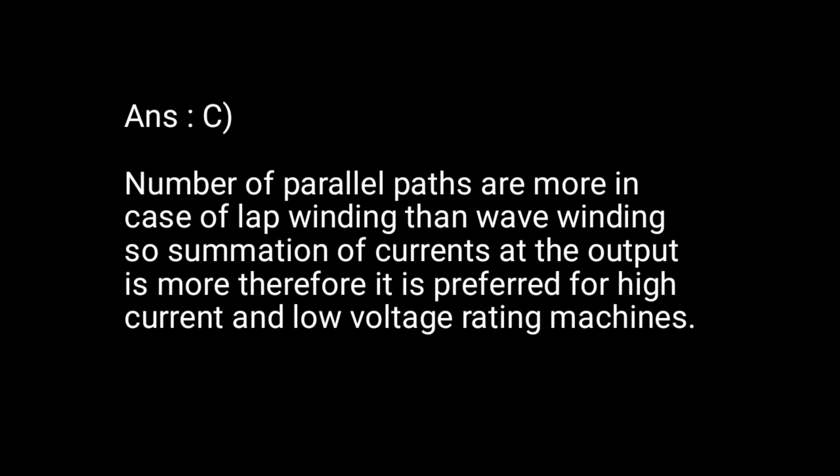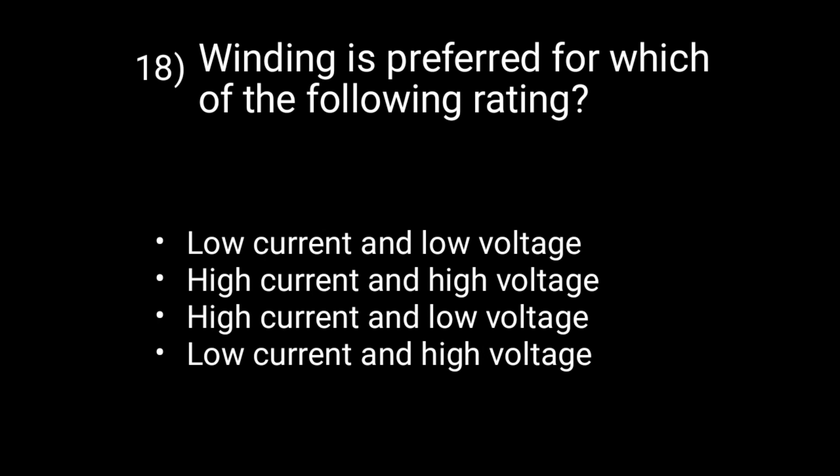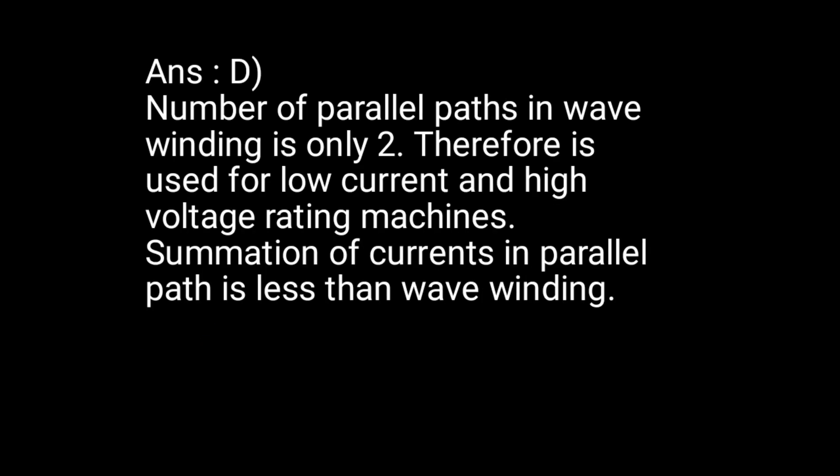Question 18: Wave winding is preferred for which rating? Option D is correct — low current and high voltage. The number of parallel paths in wave winding is only 2, so the summation of current in parallel paths is less. Therefore, wave winding is used for low current and high voltage rating machines.